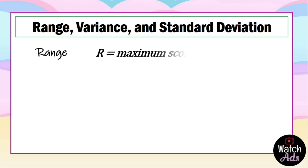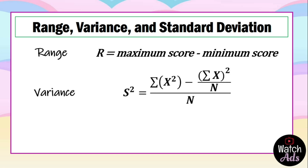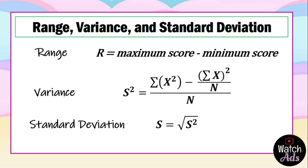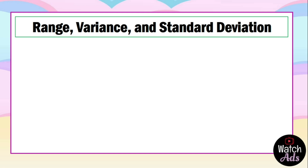For our range, R is equal to the maximum score less the minimum score. The formula for variance is: s² = (Σx² − (Σx)² / n) / n. And the formula for standard deviation is s = √s². The formulas may look a little complex, but when we take them into computation, I'll make sure it is not very hard.